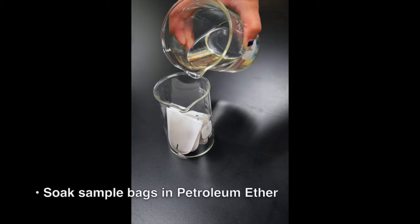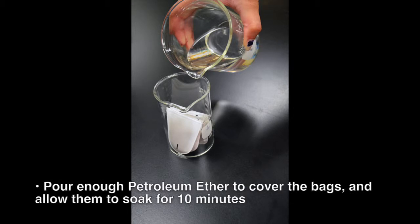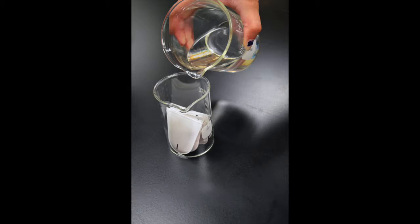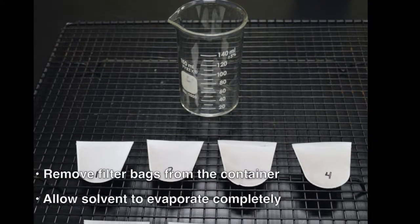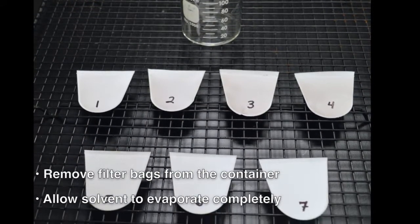Soak the bags in petroleum ether. Place all XT4 filter bags into a beaker or other container. Pour enough petroleum ether into the container to cover the bags and allow them to soak in the solvent for 10 minutes. Remove the filter bags from the container and allow the solvent to evaporate until the bags are completely dry.